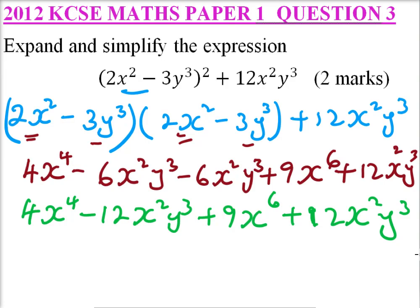So we add minus 12x squared y cubed plus 12x squared y cubed, which equals 0. And therefore we end up with 4x to power 4 plus 9y to power 6. So that is how you expand and simplify.